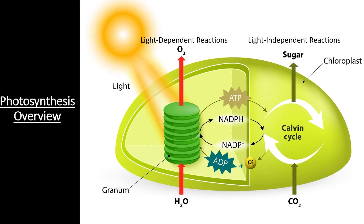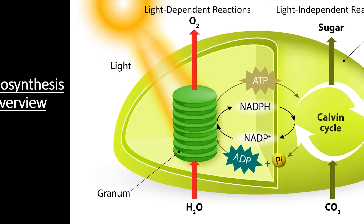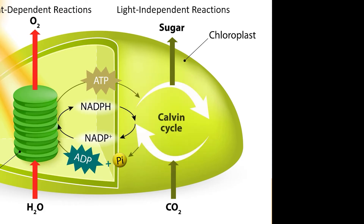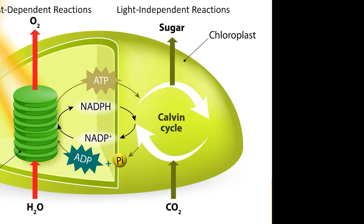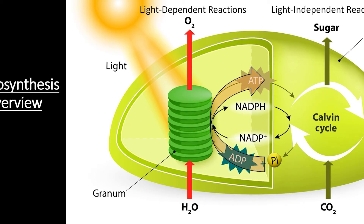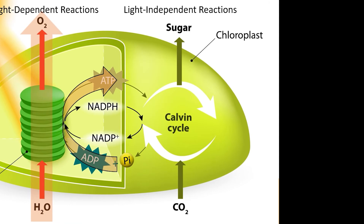These two sets take place in different parts of the chloroplast. The light-dependent reactions happen on the thylakoid membrane in the stacks of grana, while the light-independent reactions happen in the stroma, or space between the grana, within each chloroplast. The light-dependent reactions extract energy from the sun and store it in the bonds of ATP molecules and electron carriers like NADPH, using water and releasing oxygen. The light-independent reactions then use the energy from ATP and NADPH to combine carbon dioxide molecules into glucose.